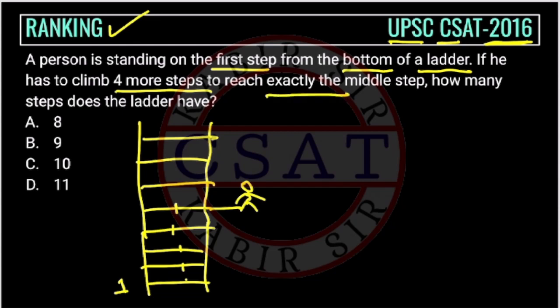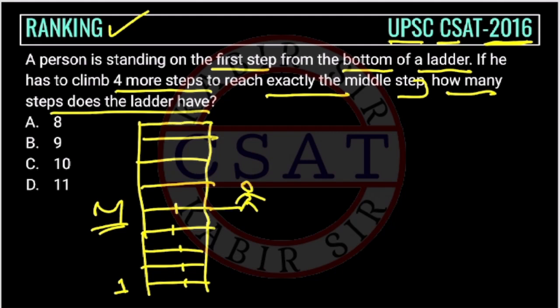To reach exactly the middle step — this is the middle one. How many steps does the ladder have? This is the middle step, it's just one step. 1, 2, 3, 4 — it's one more step. This one is the middle step.